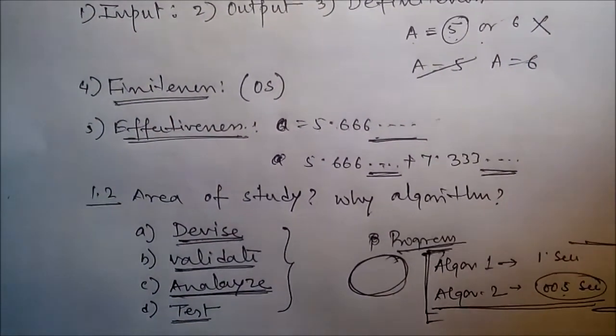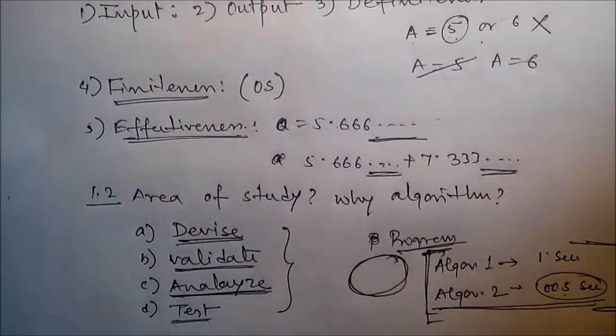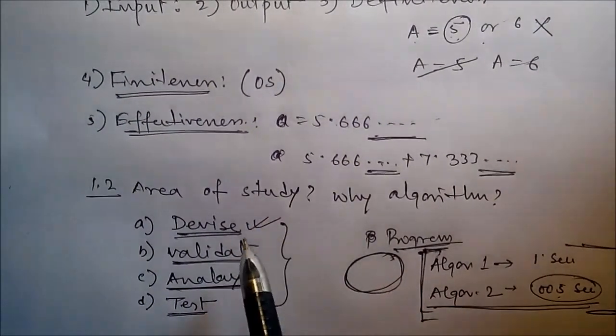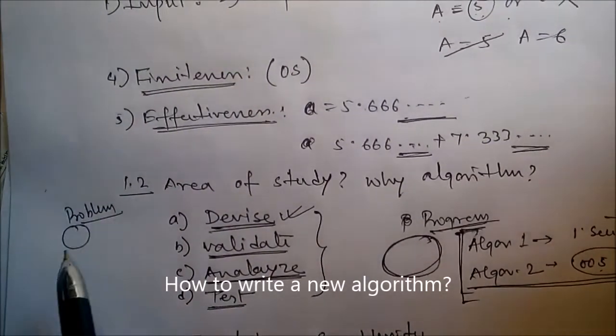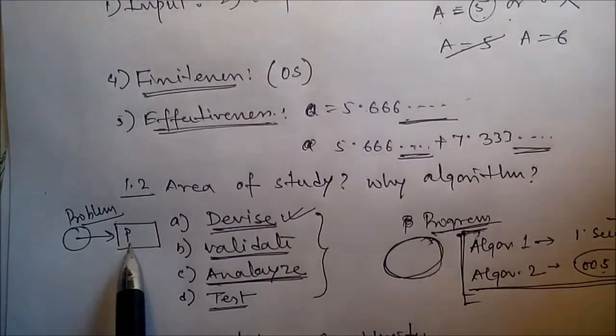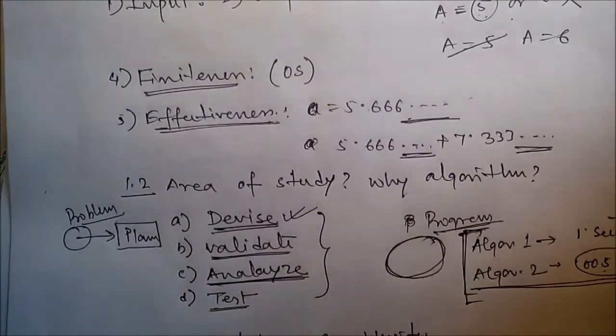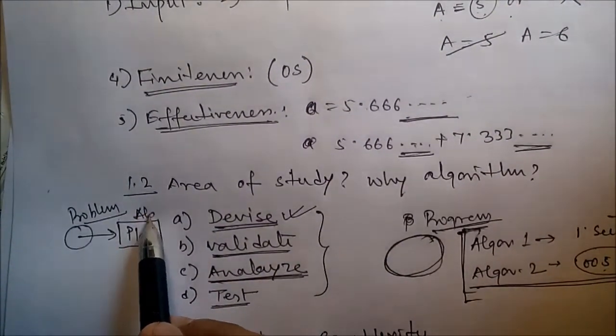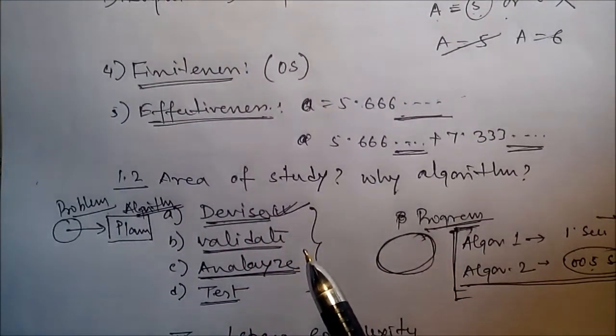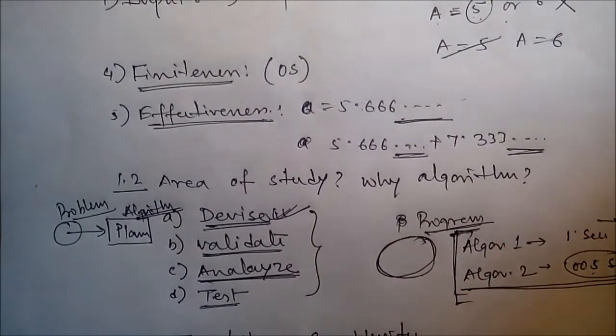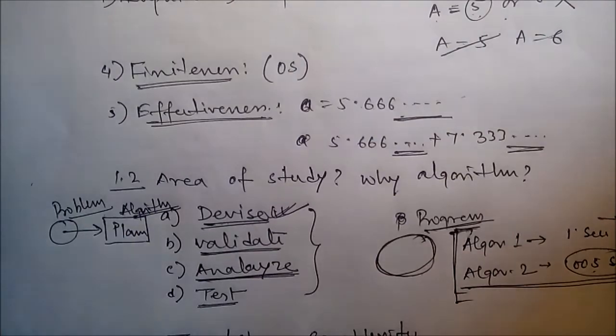Now, area of study. The study of algorithms includes many important and active areas of research. There are four distinct areas of study we can identify. First is how to devise an algorithm - how to create an algorithm. Suppose a problem is there; to conquer the problem we have to write a plan, a blueprint. That plan is nothing but our algorithm.